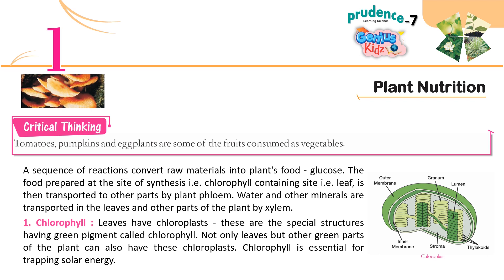Chlorophyll: Leaves have chloroplasts — these are special structures having a green pigment called chlorophyll. Not only leaves but other green parts of the plant can also have these chloroplasts. Chlorophyll is essential for trapping solar energy.